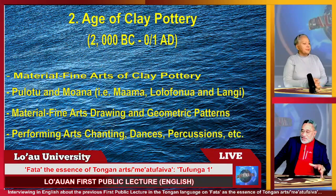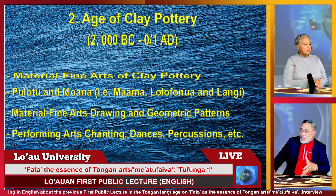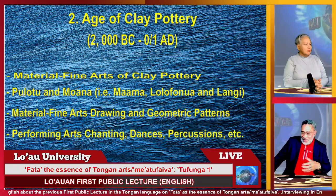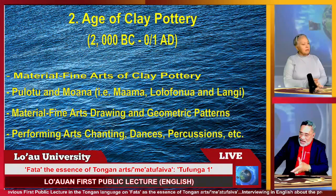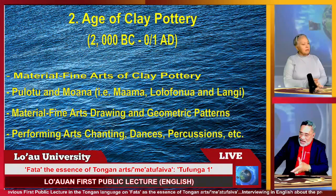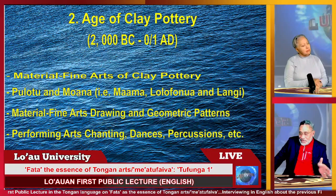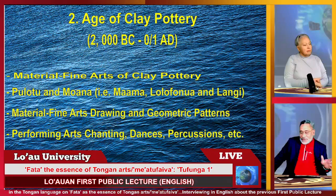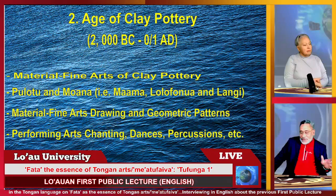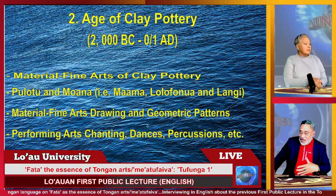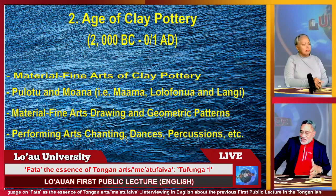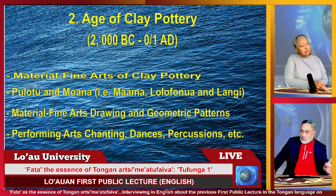Moana with Maama, Lolofonua, and Lange — for me, they were the expansions of the new migrants, the Lapita people or the Moana people, originally Tongans and Samoans. Pulotu, as I mentioned, is about Fiji and Melanesia. Material fine arts drawing and geometric patterns continued to develop, and performing arts the same. If it is the Lapita people who arrived in Tonga, they already had their arts, drawings, and pottery — they just brought it with them.